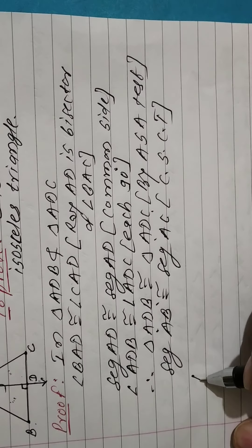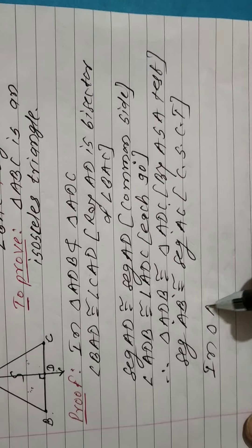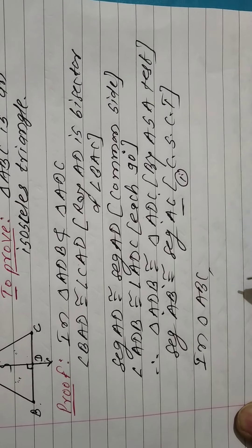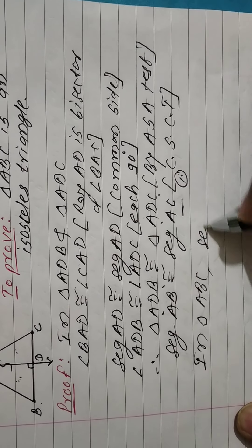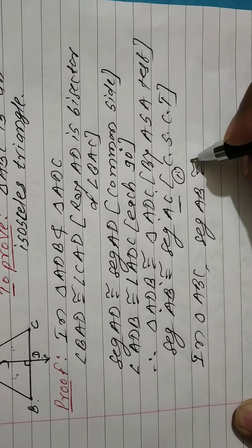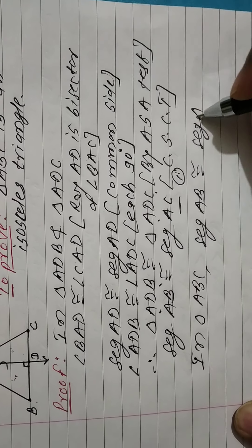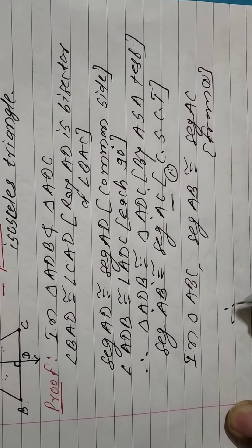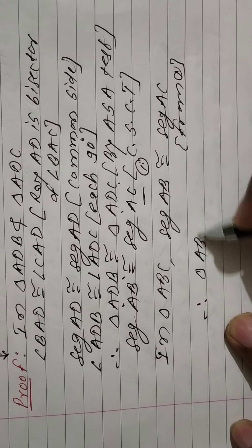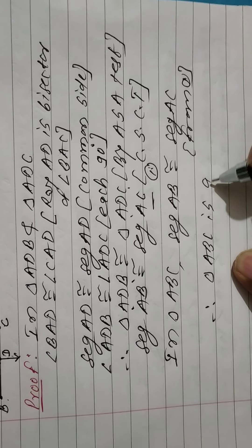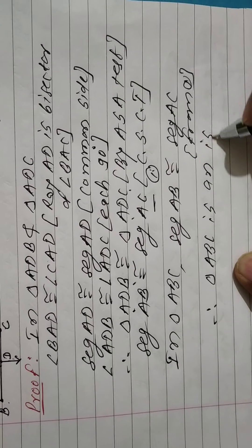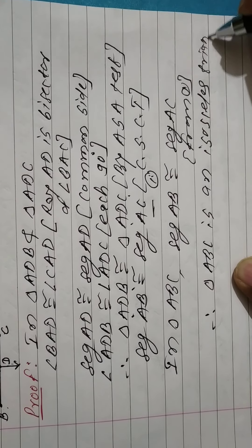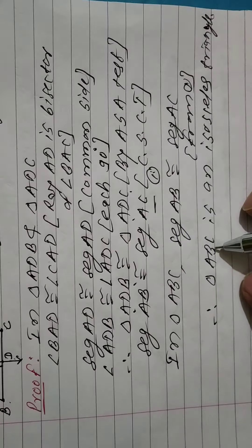In triangle ABC, segment AB is congruent to segment AC — corresponding sides of congruent triangles. Therefore, triangle ABC is an isosceles triangle. Hence, it is proved.